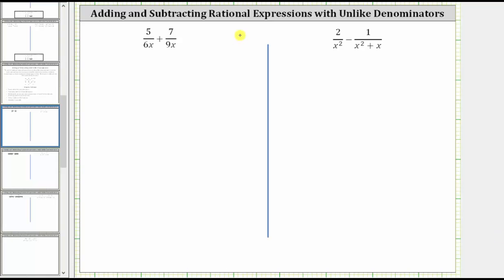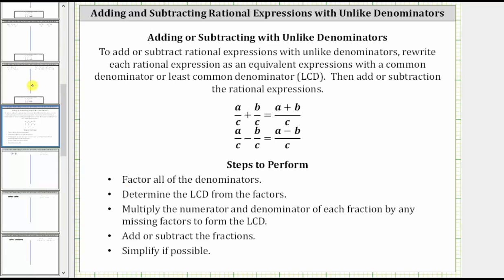We are asked to add or subtract the given rational expressions. Notice for both examples, we have unlike denominators — denominators that are not the same. Therefore, the first step is to determine a common denominator, hopefully the least common denominator. To do this, we will first factor the denominators, then determine the LCD from the factors. Then we will multiply the numerator and denominator of each fraction by any missing factors to form the LCD, and then add or subtract the fractions and simplify if possible.